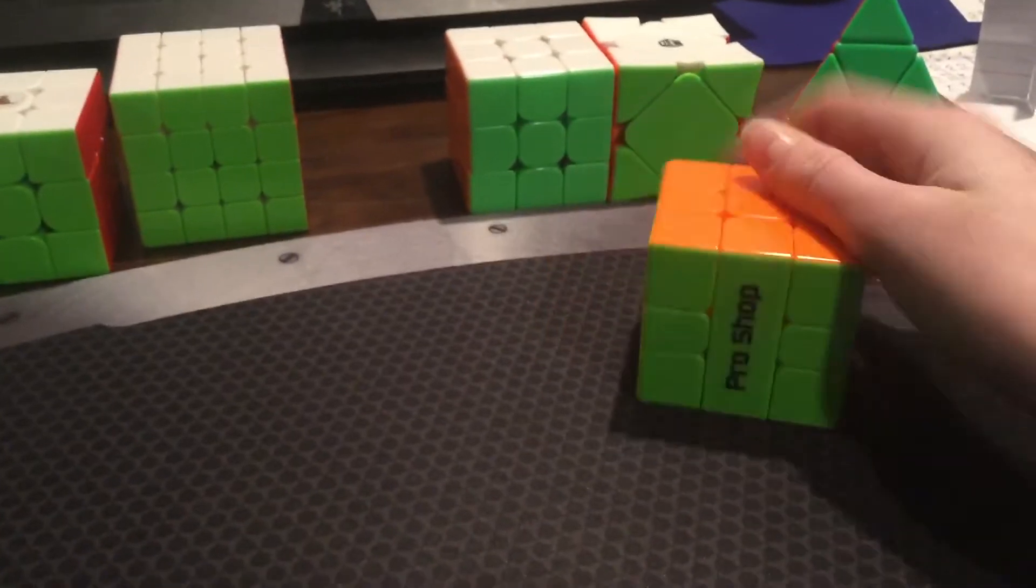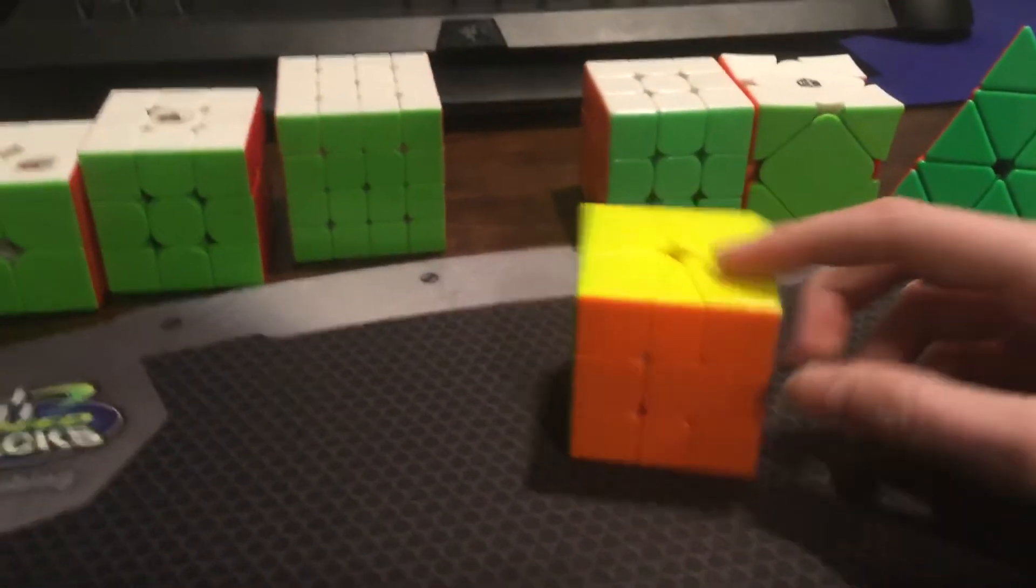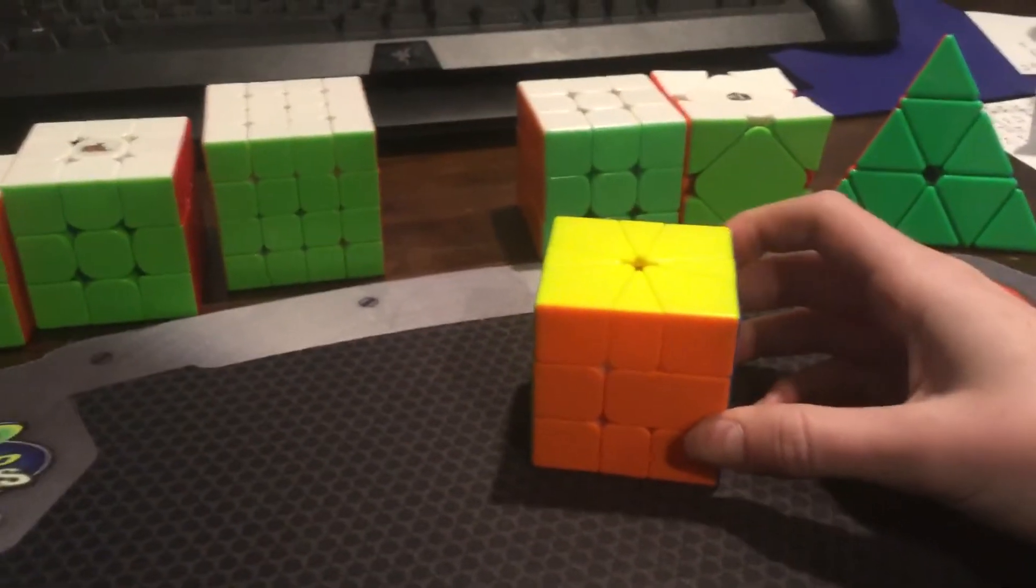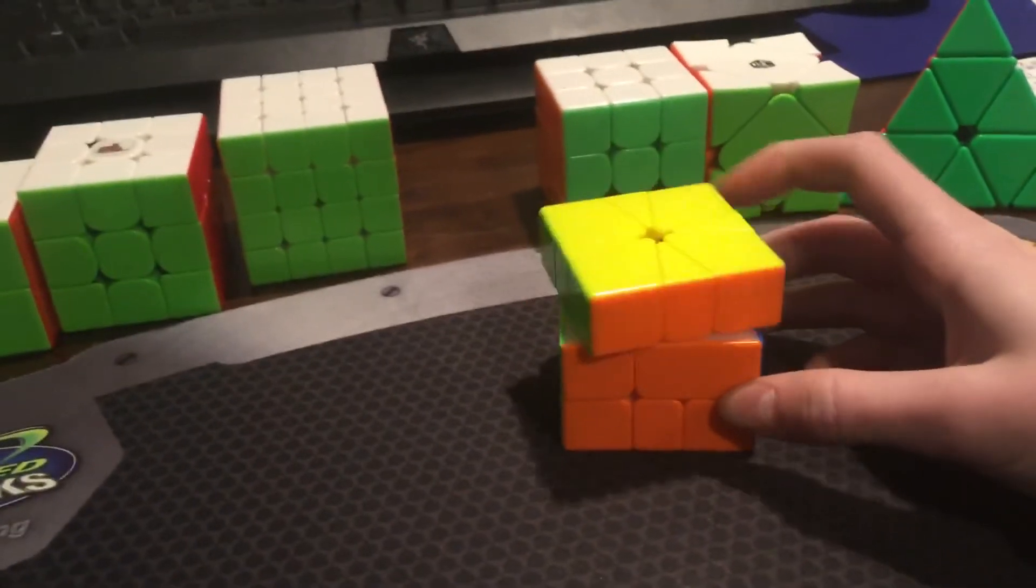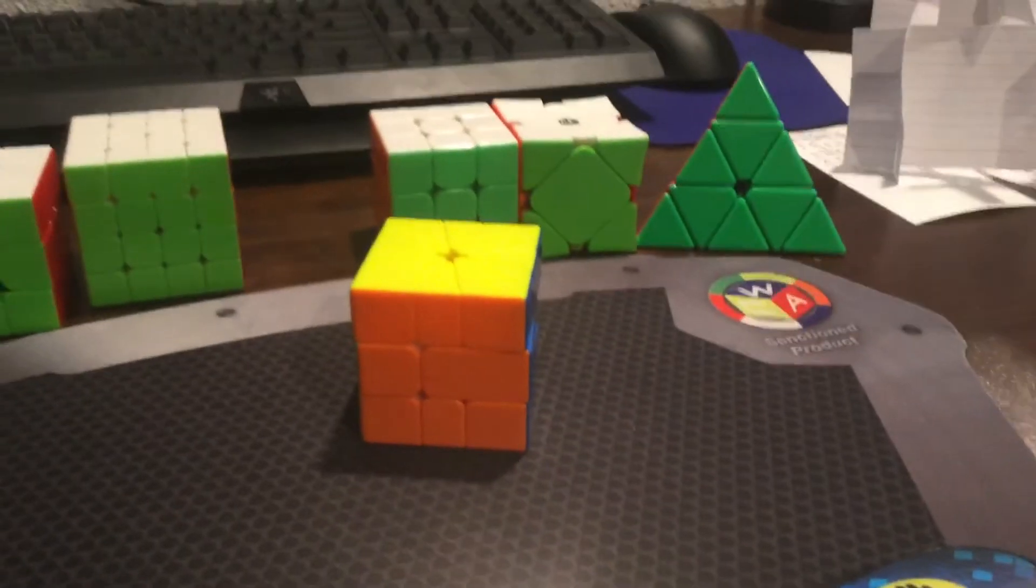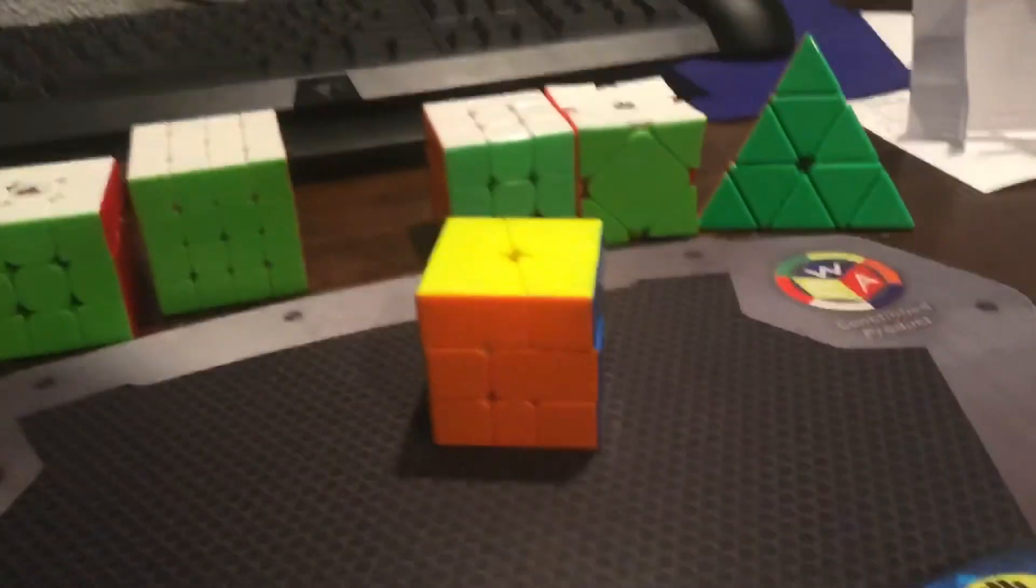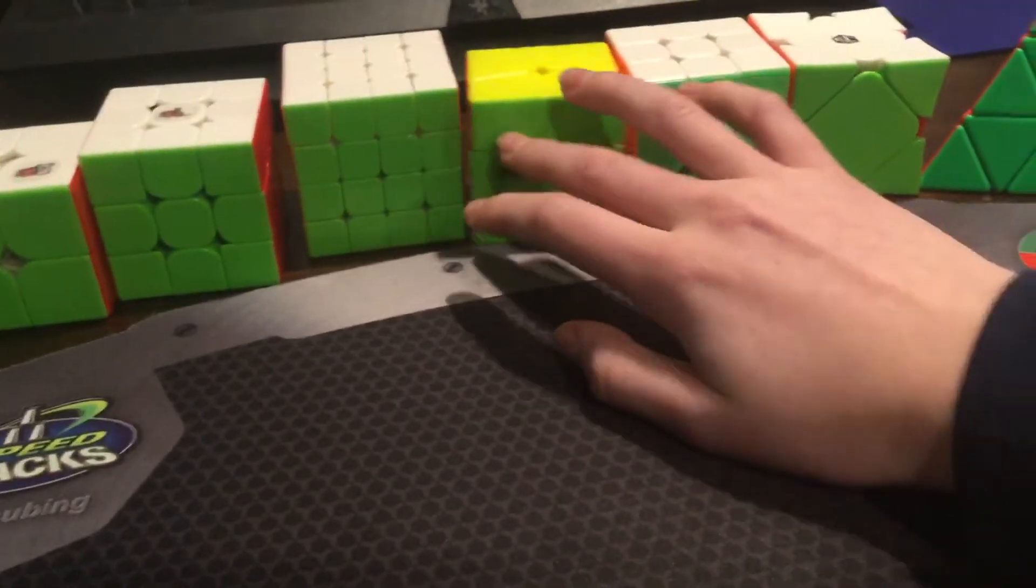Square 1. This is my Cubicle Pro Shop Volk version 2 magnetic. I just got this pretty recently and already got a new PB on it of 7.18 seconds, so that's pretty great. I'd like to get a sub-15 average, maybe even a sub-10 single, but probably not. I'd definitely like to make finals. I've made finals at the last two comps, so it'd be kind of disappointing if I didn't this time.